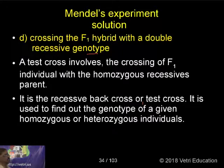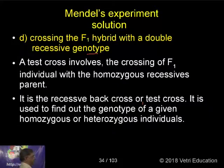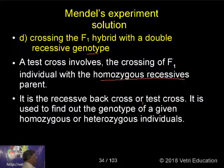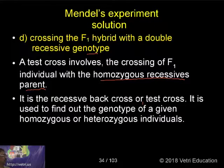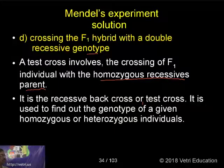A test cross involves crossing of an F1 individual with a homozygous recessive parent. This recessive backcross is also known as the test cross. It is used to find out the genotype of a given homozygous or heterozygous individual.